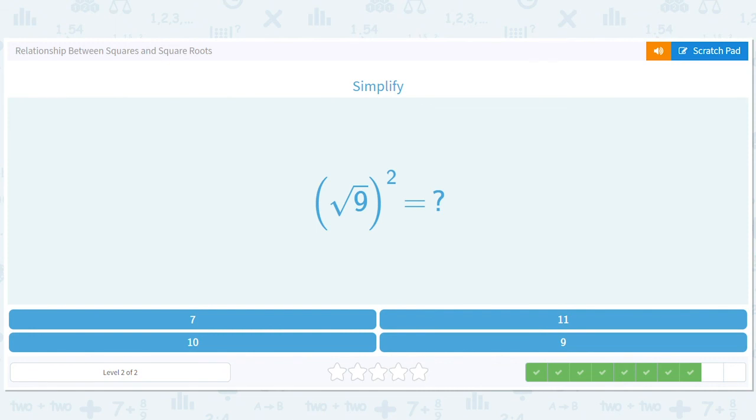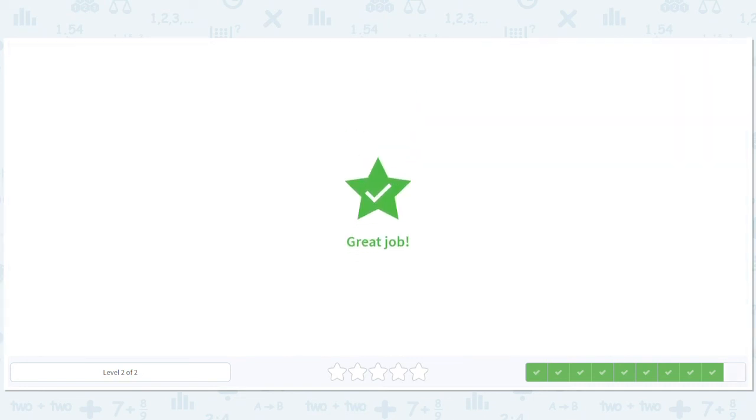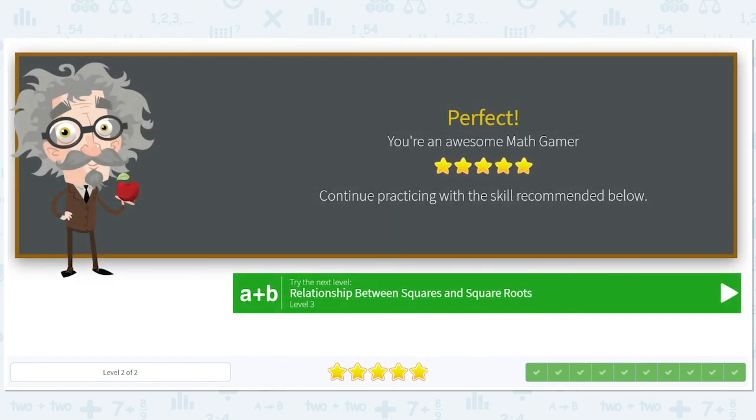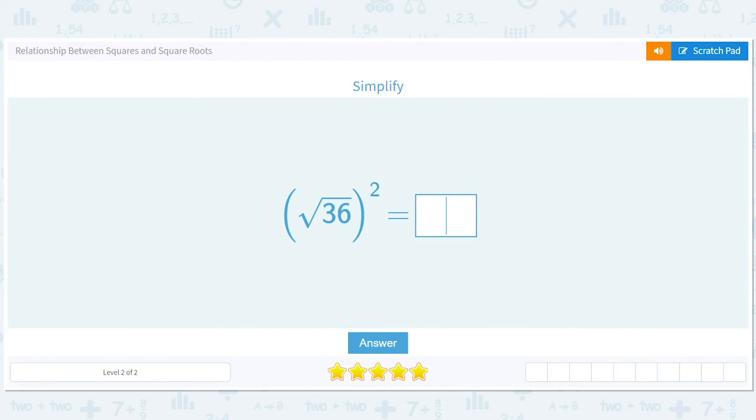Square root of 9, 3. Doesn't matter, though, because 3 squared is back to 9. Square root of 4 is 2. 2 squared is 4. Okay, guys. Oh, there's a level 3.